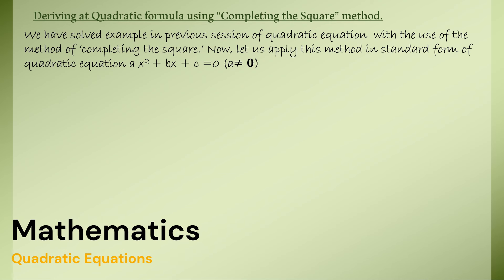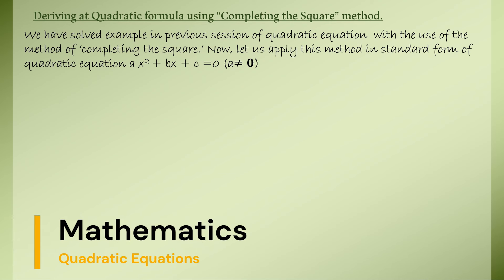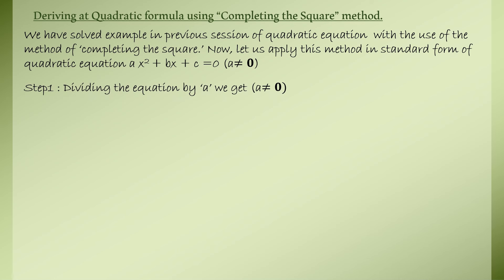Method: we'll start with considering ax² + bx + c = 0, where a is not equal to zero. Dividing the equation by a, since a is not equal to zero, we get x² + (b/a)x + (c/a) = 0. This division we did on both sides of the equation.